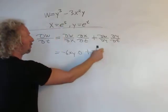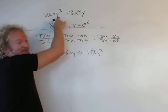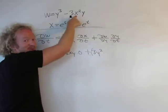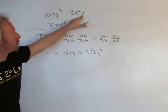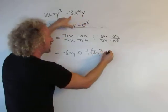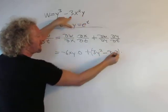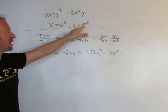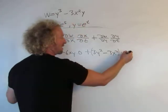Plus del w del y, we're going to get 3y squared. That's that derivative. Here, we're taking the derivative of this with respect to y. The derivative of y is 1, so we get minus 3x squared. And then times del y del t is just e to the t. The derivative of e to t is e to the t.